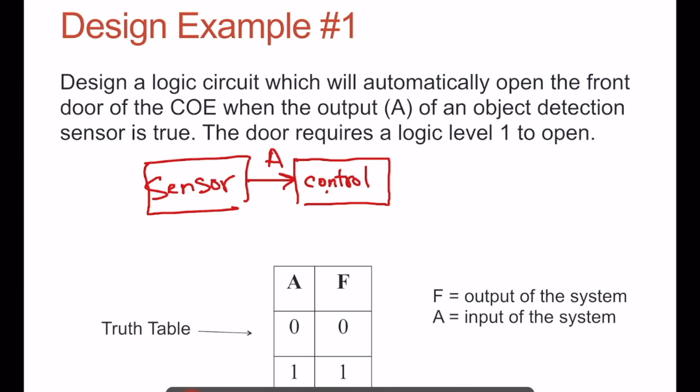We're going to have an output, which we'll call F, which will be a 1 when we want to open the door, and that will go to an actuator, which is the door opener.